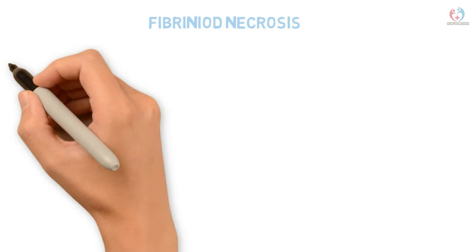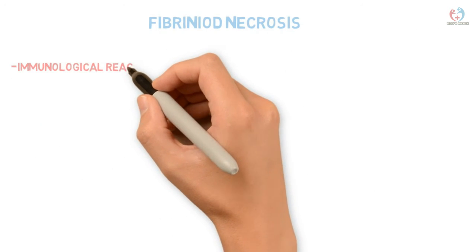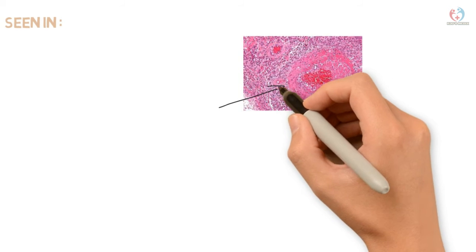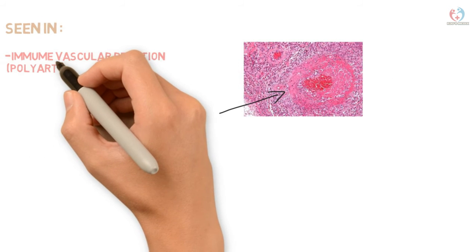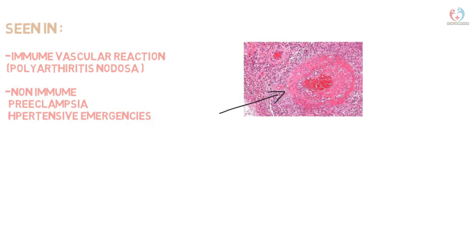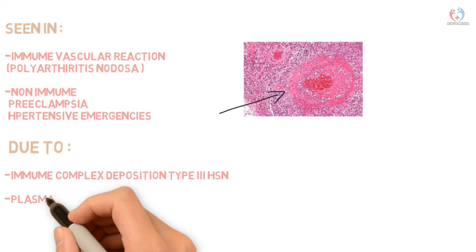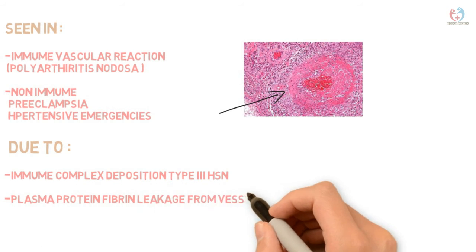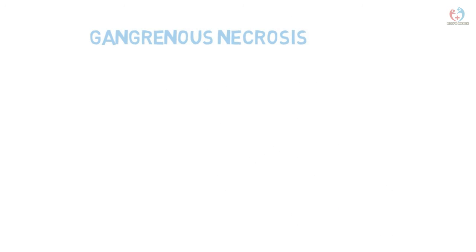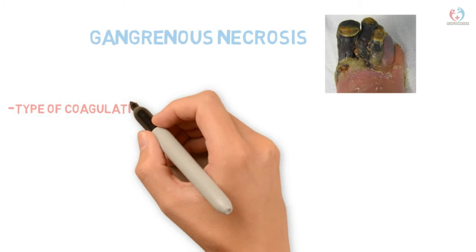Fibrinoid necrosis is a type of immunological reaction in which antigen-antibody complexes are deposited in blood vessel walls. It is seen in immune vascular reactions such as polyarteritis nodosa (PAN) and non-immune conditions like preeclampsia and hypertensive imbalances. It is mediated by Type III hypersensitivity reaction, with deposition of immune complexes and plasma protein fibrin leaking from the vessel wall.